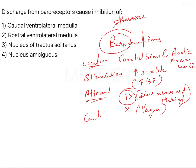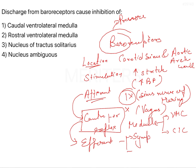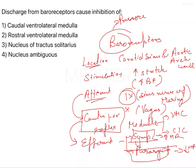What is the center of the reflex? The center is the medulla. In the medulla, there are two key components: the VMC (vasomotor center) and the CIC (cardioinhibitory center). The efferent pathway carries signals from the center, and these include the sympathetic nerves and parasympathetic nerves.